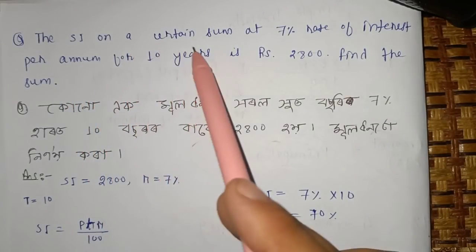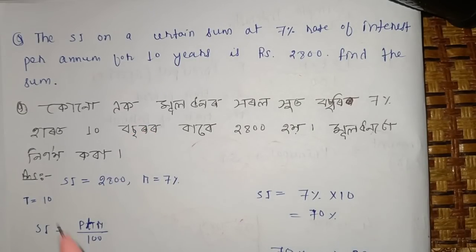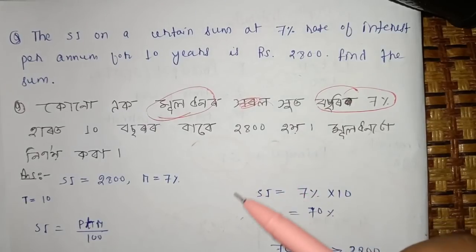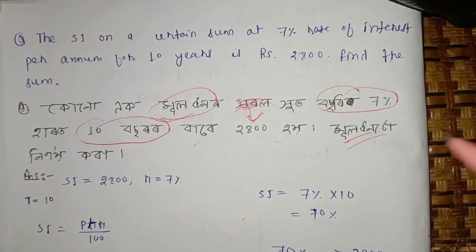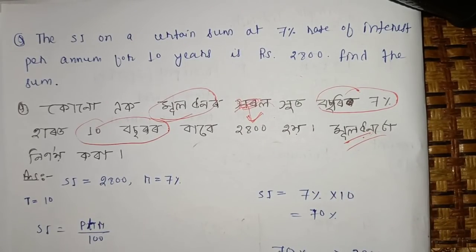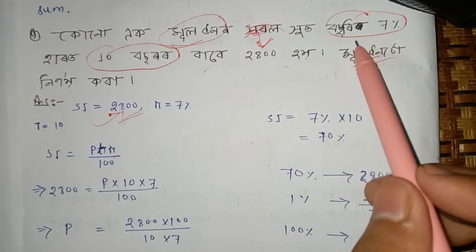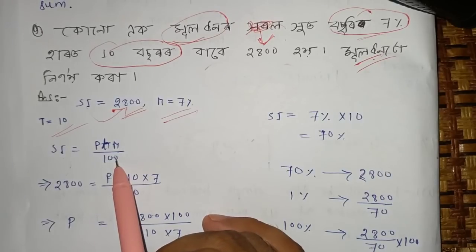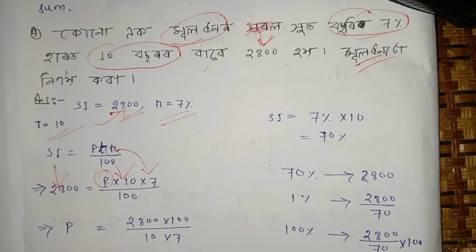The next question is: the SI on a certain sum at 7% rate of interest for 10 years is 2,800. We will be able to apply the formula. We will have 7% interest and simple interest is 2,800. We will have to use the formula: SI is equal to PTR divided by 100. The value of SI is 2,800, T is 10, R is 7. We have to solve the equation and cross multiply.